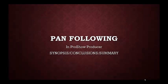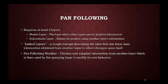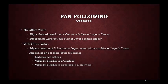Welcome to this synopsis and conclusion of the pan-following tutorial. Pan-following requires at least two layers: a subordinate layer and a master layer. The master layer provides position information used by the subordinate layer to adjust its own position — they're not linked layers, just associated. The pan-following modifier obtains information for the current layer and uses it to modify its own positioning. With no offset value, the subordinate layer's center is aligned with the master layer's center. If you do provide an offset value, it's positioning relative to the master layer's center position.